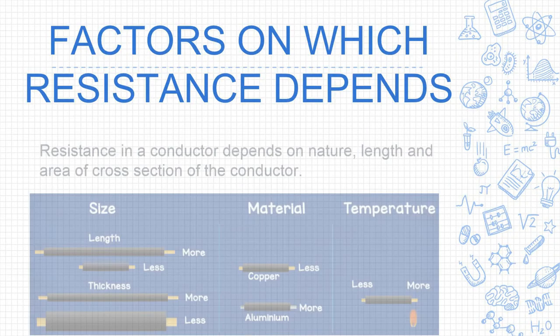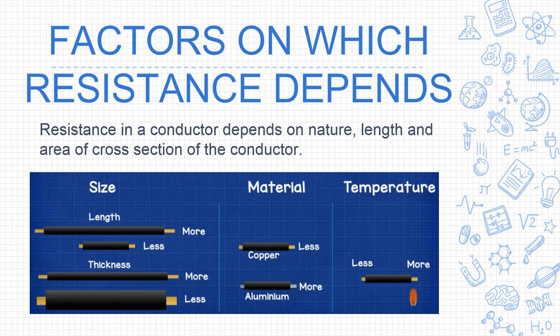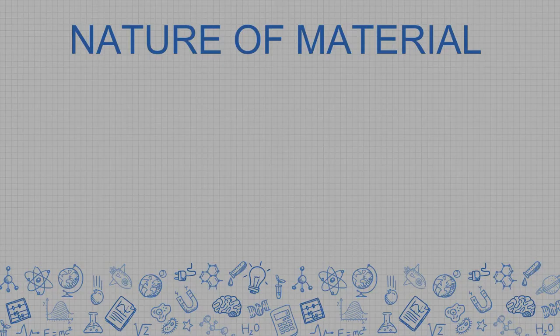Next, factors on which resistance depends. Resistance depends on the nature, length, and area of cross-section of the conductor. Let us look at each factor one by one. First is the nature of material — the type of material of the conductor greatly affects resistance.